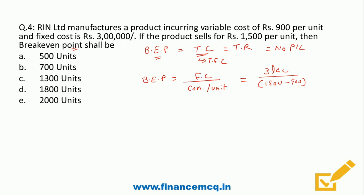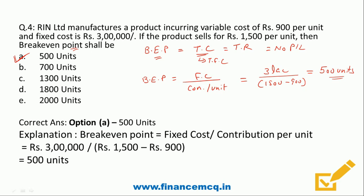So break-even point = ₹3,00,000 ÷ ₹600 = 500 units. The correct answer is Option A: 500 units.